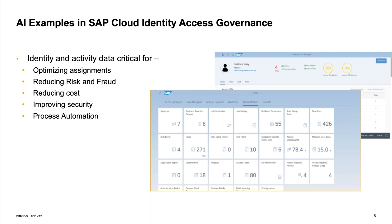Within the SAP access governance or access control solution today, there's already data available to help optimize the number of assignments users are granted and minimize any kind of risk, fraud, or misuse. When you run a risk or critical access analysis, this shows you all possible examples of potentially toxic access — access that might be very sensitive to an organization. For example, if you're Coca-Cola, you don't want people accessing the materials needed to make the product, and you want to be very careful about who you grant the ability to make wire transfer payments.